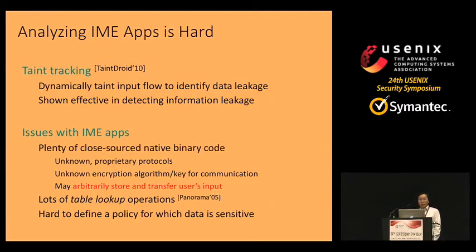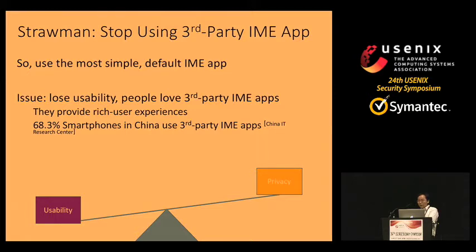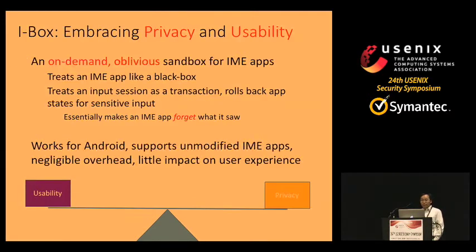Finally, it is hard to define a policy for which data is sensitive. One strong solution would be to stop using third-party IME apps and switch back to simple default IME apps that can be verified not to leak user input. However, this leads to poor user experience, and people still love third-party IME apps — more than 68% of smartphone users in China want to use them. So we need a solution that balances usability and privacy, with the goal of mitigating sensitive information leakage while preserving usability.